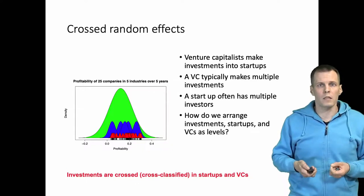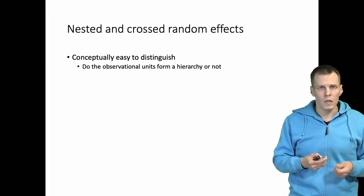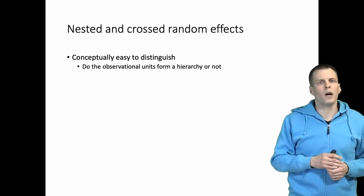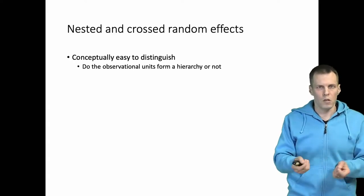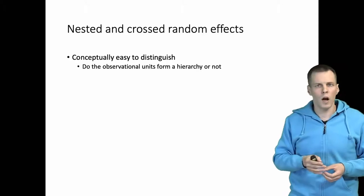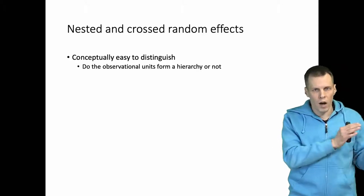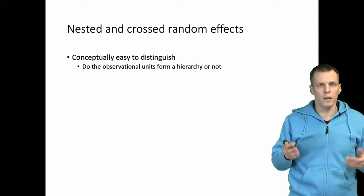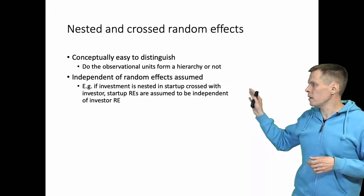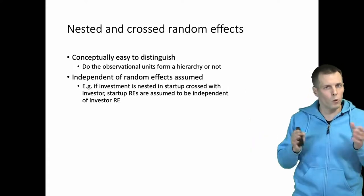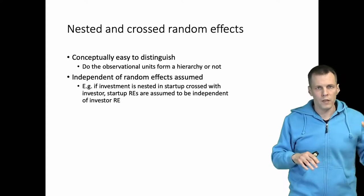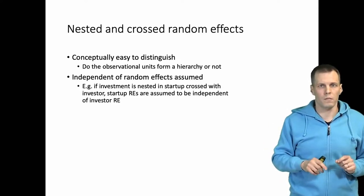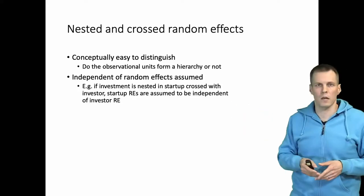How do we deal with this kind of problem in multi-level modeling? Conceptually it is simple to distinguish when you have a nested structure and when you have a crossed structure. Can you put the observational units into a hierarchy? If no, then you have a crossed structure. If they form a hierarchy with many-to-one relationships forming a tree, then you have a nested structure. The independence of random effects is assumed in both cases — so if you have investors and startups, the investor random effects and startup random effects are assumed to be independent.